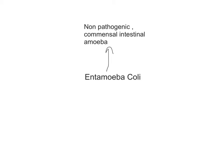Today we're going to talk about Entamoeba coli. Entamoeba coli is part of the same genus as Entamoeba histolytica. Entamoeba coli is a non-pathogenic commensal intestinal amoeba, which means it is not disease-causing. However, it still derives nutrients and exists in a non-mutual relationship with the host.